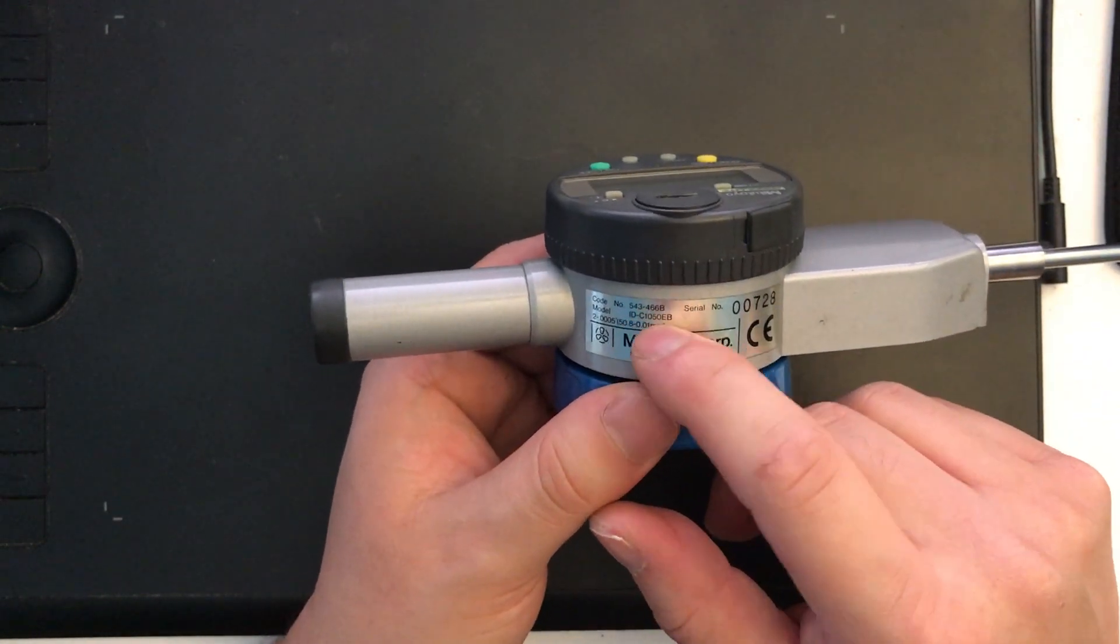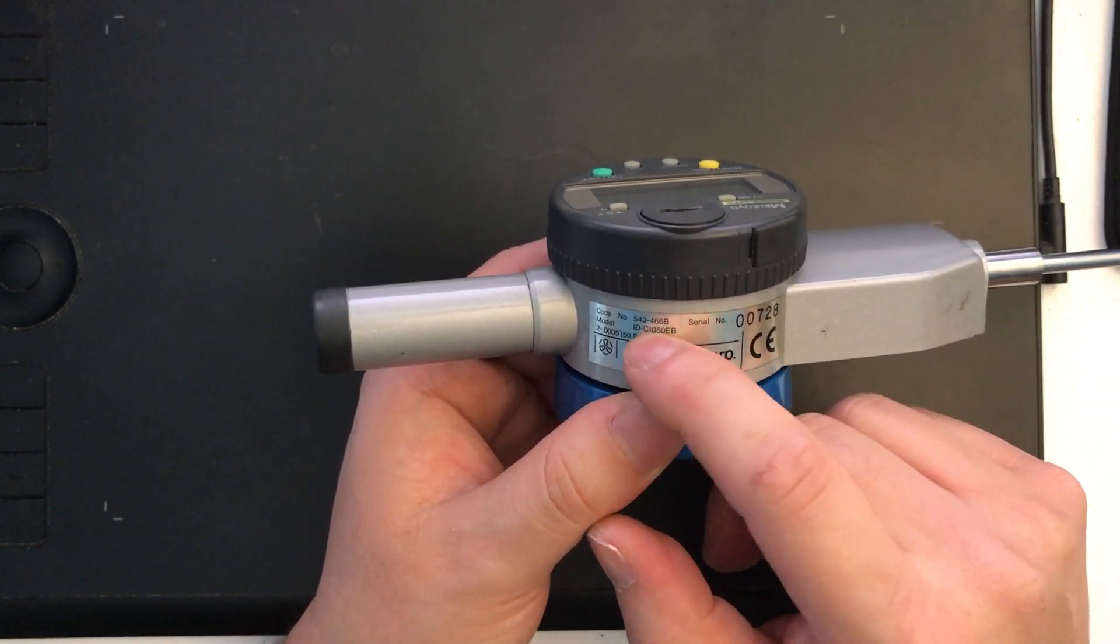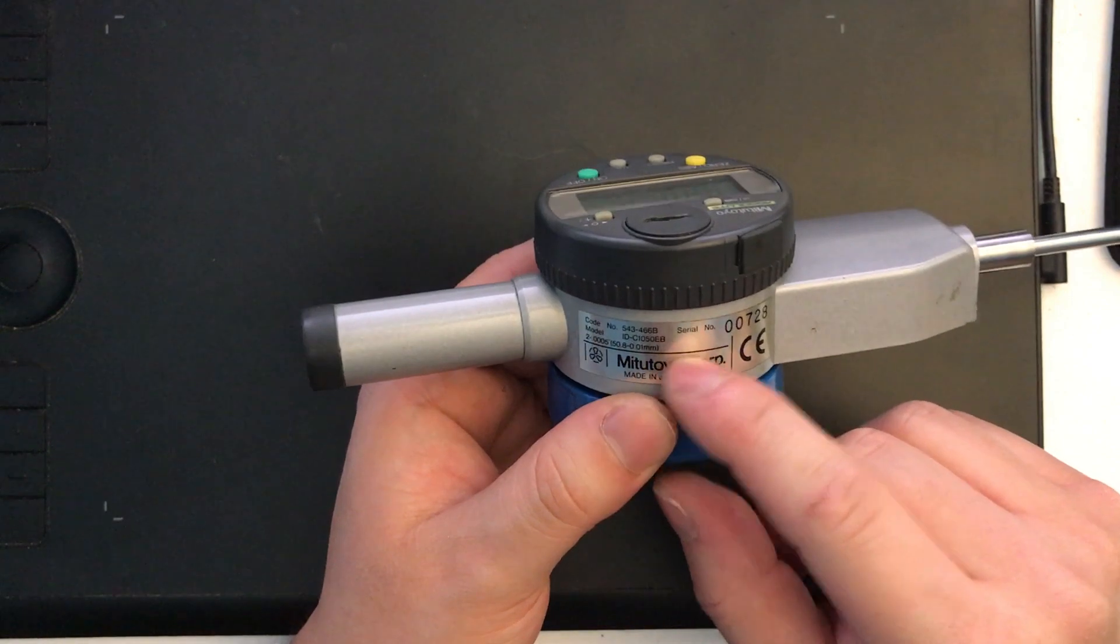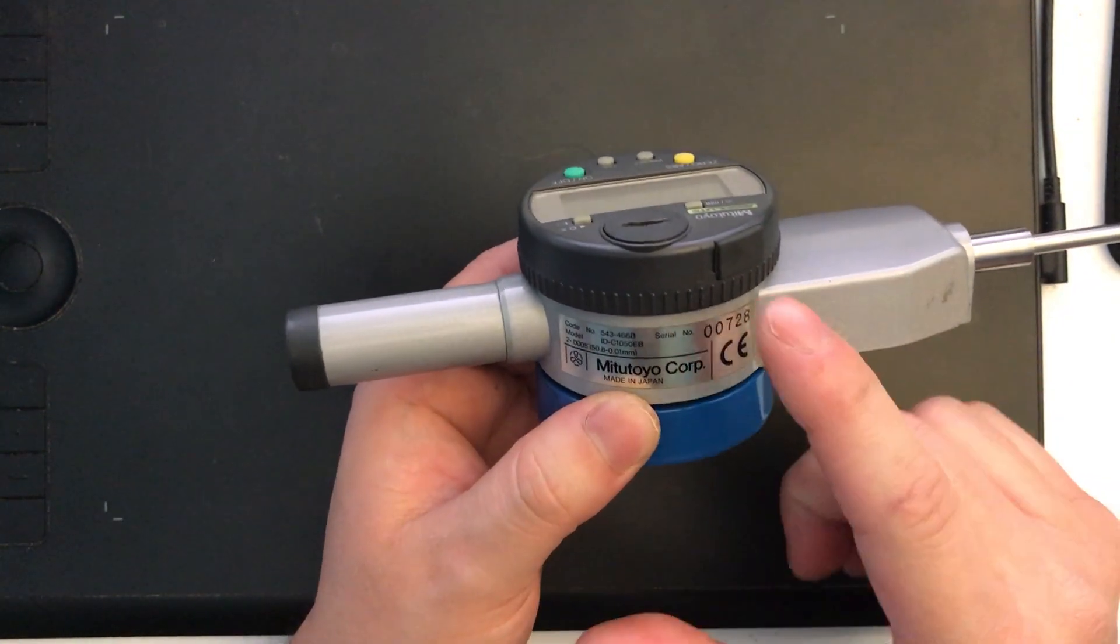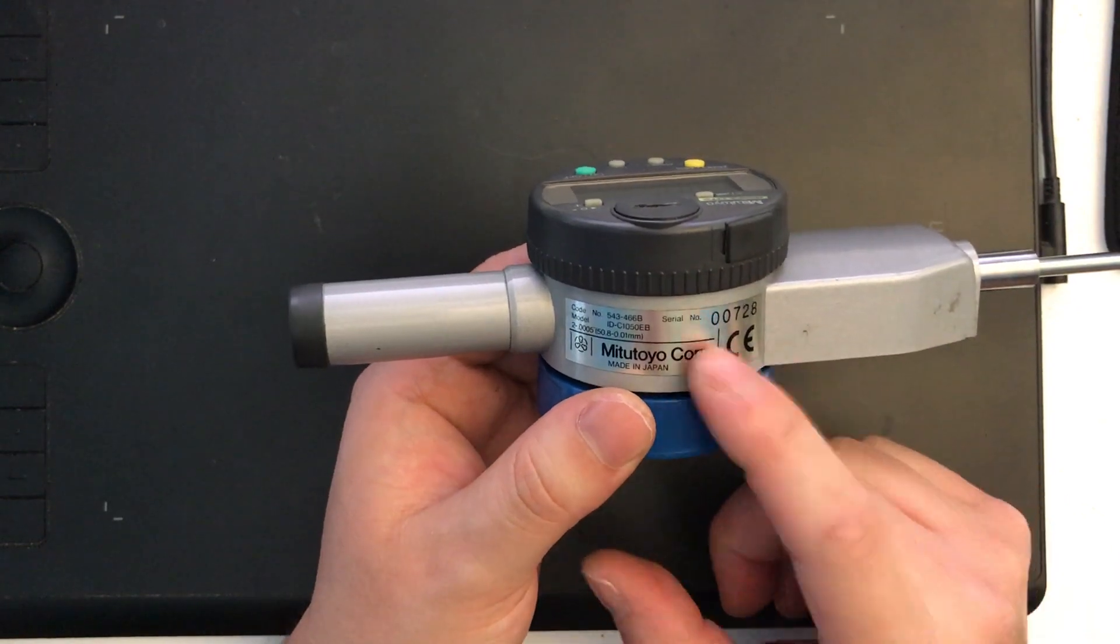The 543 is the series number, the subsequent numbers are the variations, and the model number I believe refers to the exact model this actually is. That's kind of the real key number when you're trying to find these things.